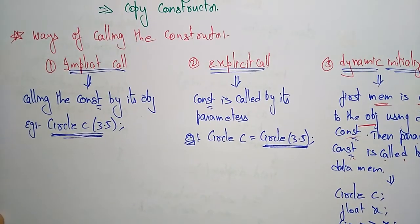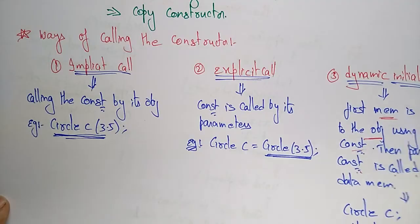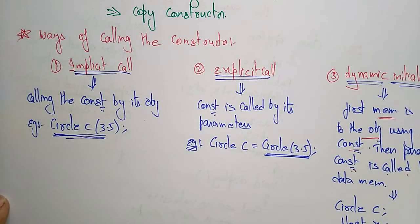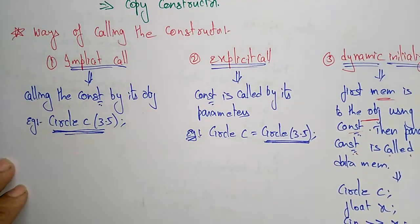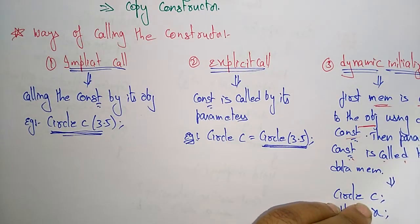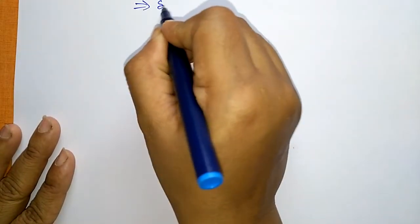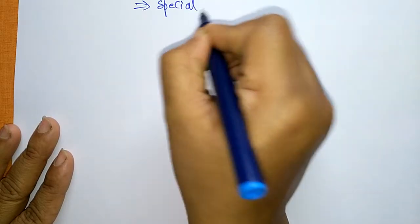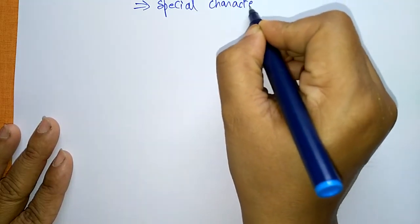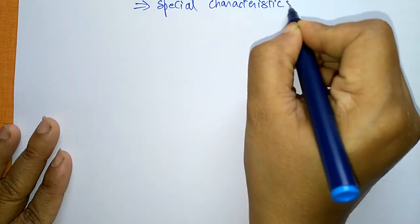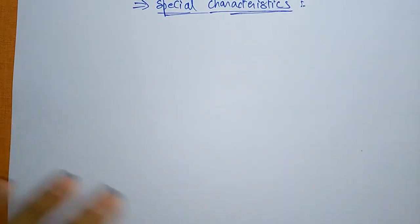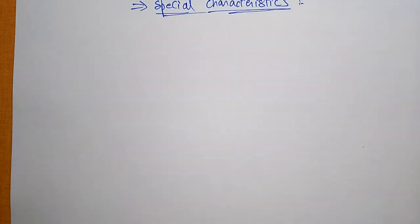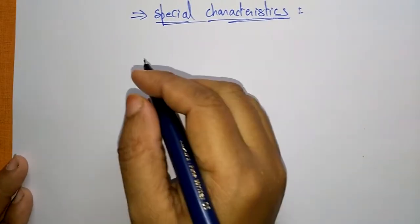These are the three different ways of calling the constructor — implicit call, explicit call, or dynamic initialization. Now let us see the special characteristics of the constructor.